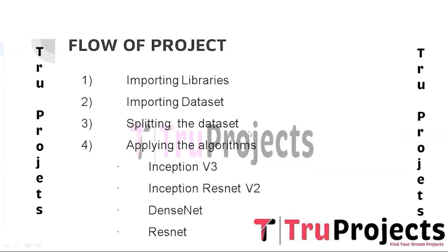The third step is splitting the dataset into training and testing sets. The imported dataset is divided into two subsets: training and testing. The training set is used for training the deep learning model, allowing it to learn from input images and corresponding labels. The testing set is kept separate and used to evaluate the model's performance on unseen data, providing insight into its accuracy and generalization ability.